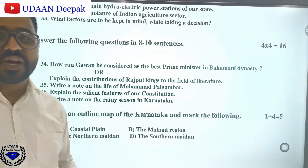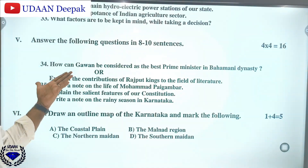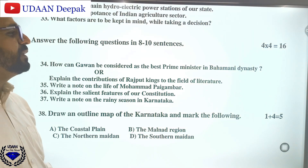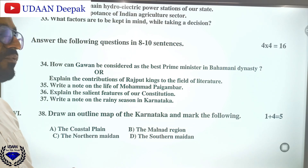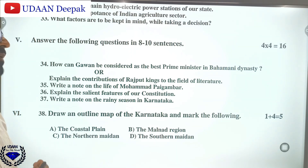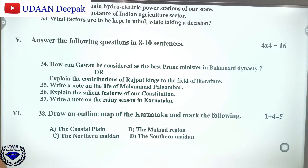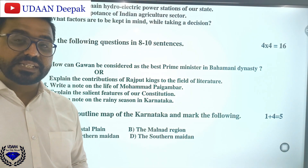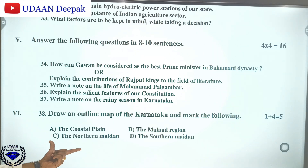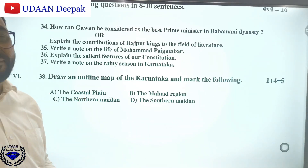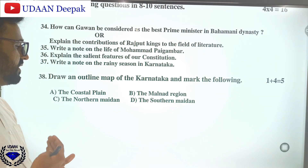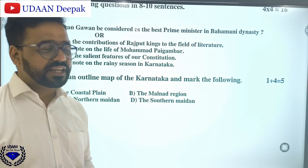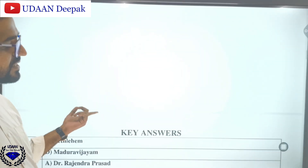Then you will be having four questions of four marks each: How can the Governor be considered the best ruler in the Mahamani dynasty? Explain the contributions of Rashtrakuta kings to the field of literature. Write a note on the life of Muhammad Paigambar. Explain the salient features of the Indian constitution. Question number 36: write a note on the many seasons in Karnataka. Draw the outline map of Karnataka and mark the following: the Malnad region, Northern Maidan, and Southern Maidan.